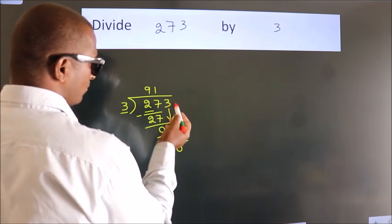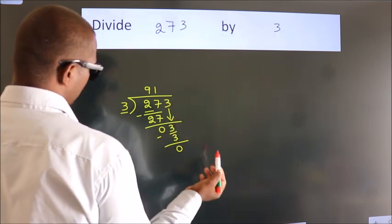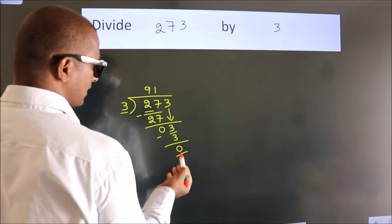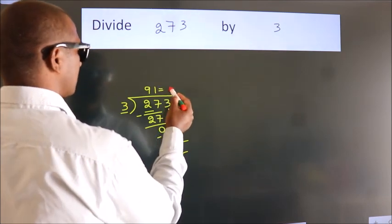After this, no more numbers to bring it down. And we got remainder 0. So, this is our quotient.